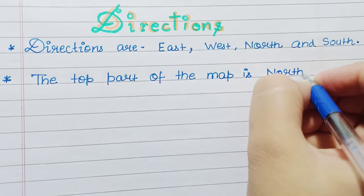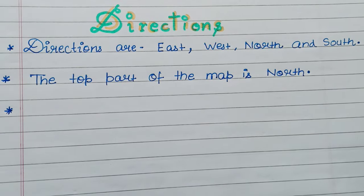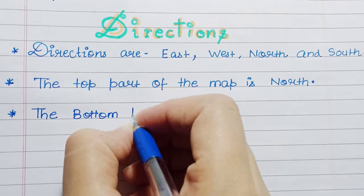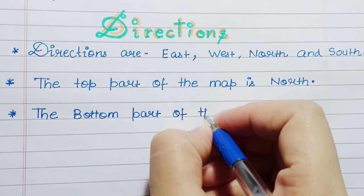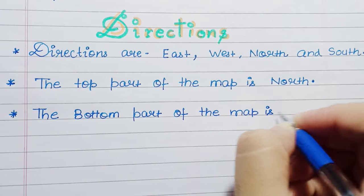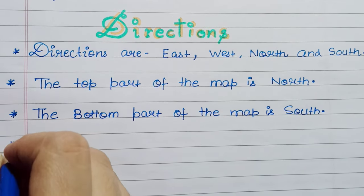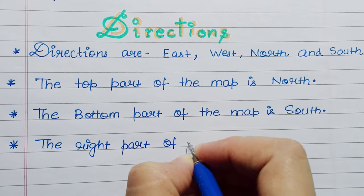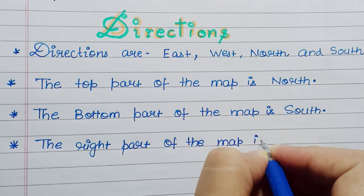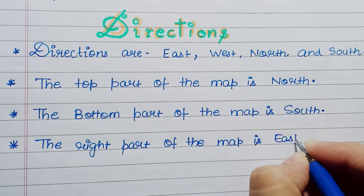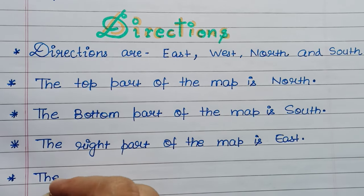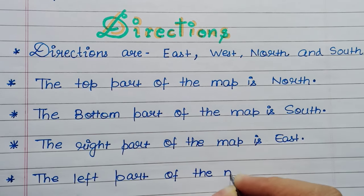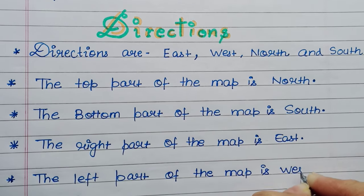The top part of the map is North. The bottom part of the map is South. The right part of the map is East. The left part of the map is West.